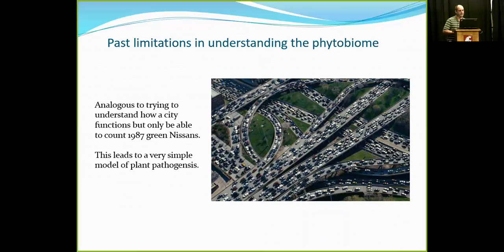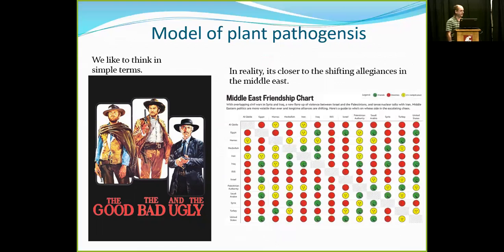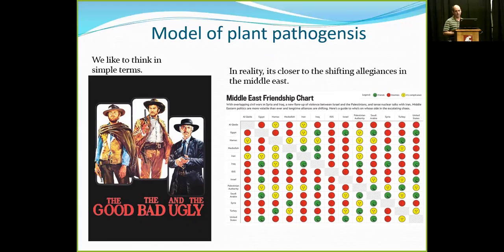As scientists, we like to be reductionists — we make things as simple as possible: the good, the bad, and the ugly. But that's not the real case. The real case is closer to the Middle East friendship chart, where most guys are complicated — good in one scenario and bad in another. It's kind of like teenagers: most of the time they're fine, but on the tenth time they do something crazy due to some group dynamic. You can't say they're all bad or all good. When you get them into a group, you never know what's going to push them over the edge.